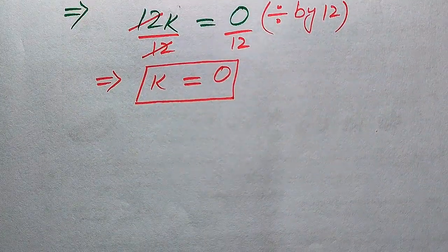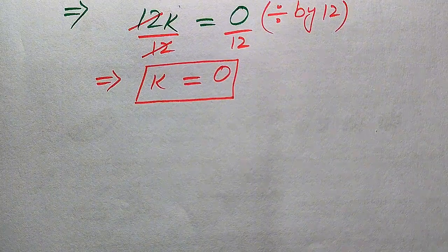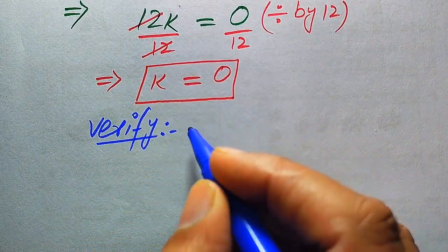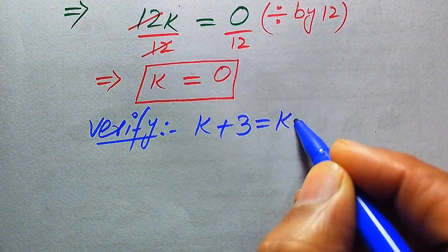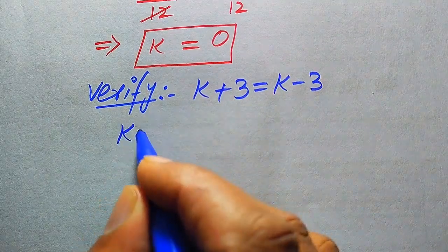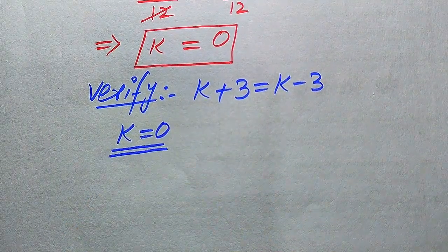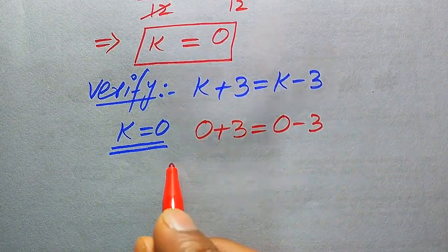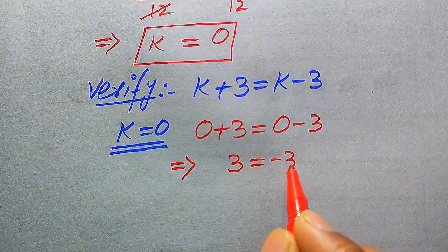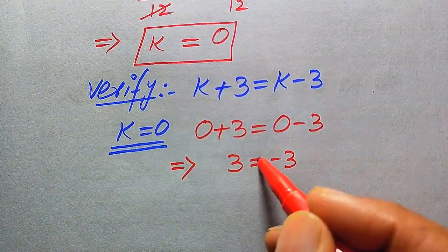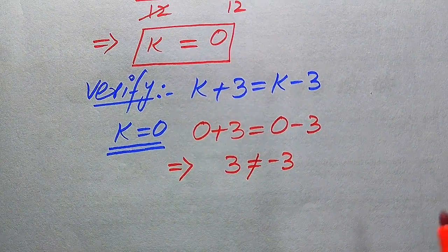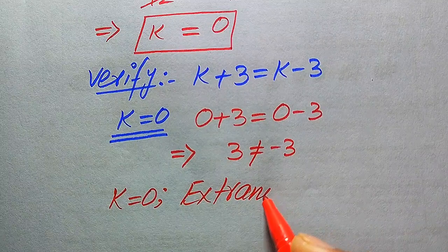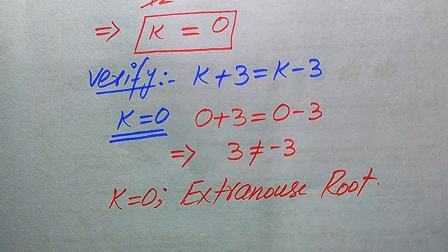We need to verify whether k equals 0 satisfies the given equation √(k+3) = k−3. Substituting k equals 0: √(0+3) equals 0 minus 3, which gives √3 equals −3. Both sides are not equal, which means k equals 0 does not satisfy the given equation. Therefore, k equals 0 is an extraneous root of the given equation.